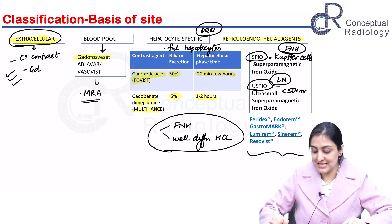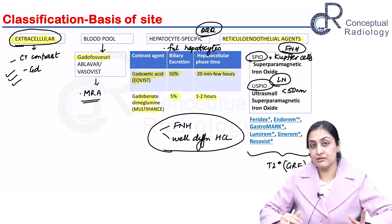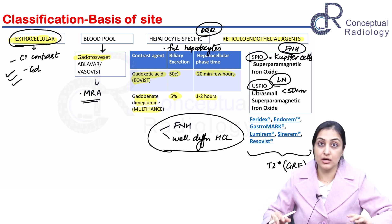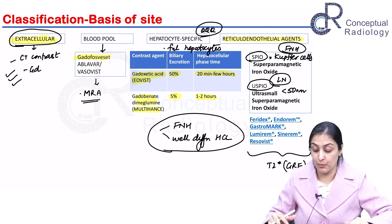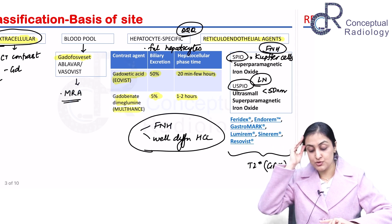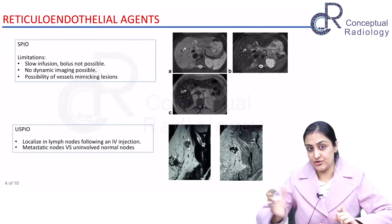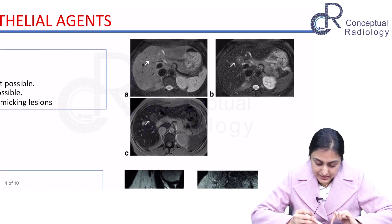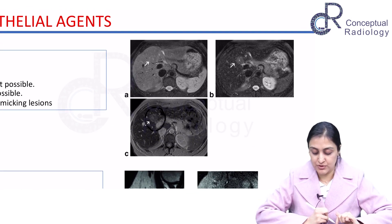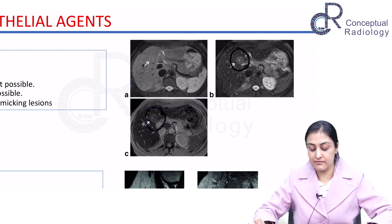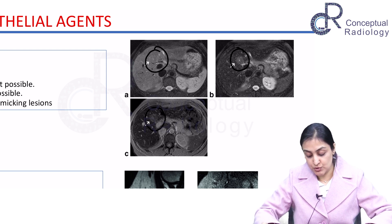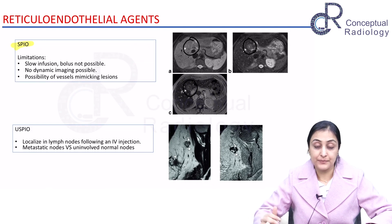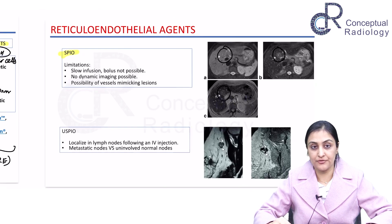For both SPIO and USPIO, we use a gradient T2* image. These are reverse/inverse contrast agents where uptake appears dark — seen as a signal loss hotspot. In this example image, on the gradient echo, SPIO uptake is seen in the lesion with a central T2 hyperintense scar, which is almost isointense on gradient images. This is how FNH shows uptake of SPIO.